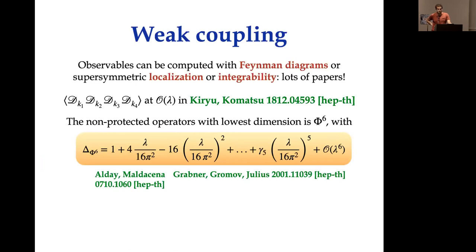The other observable is the conformal dimension of the lowest non-protected state in the theory, which at weak coupling corresponds to the fundamental scalar of N=4 coupled to the line — dimension one in the free theory. Various corrections were computed over the past years; the first order lambda correction was computed by Maldacena, who expected this operator to become infinitely heavy at large lambda. This turned out to be false, and we now know the dimension up to order lambda to the fifth from a paper by Grabner, Gromov, and Julius using the quantum spectral curve.